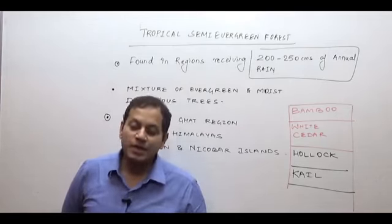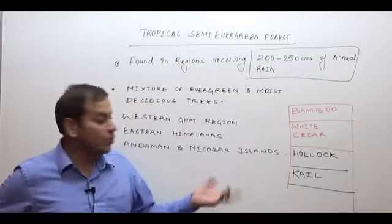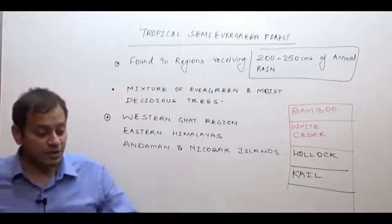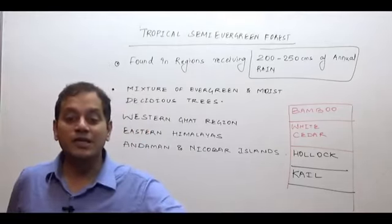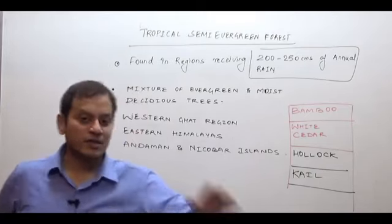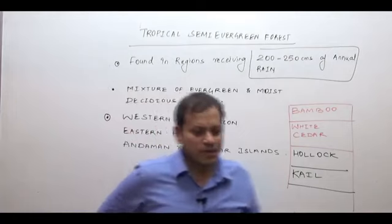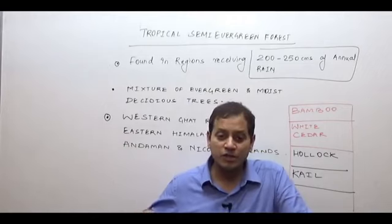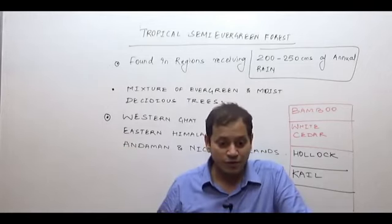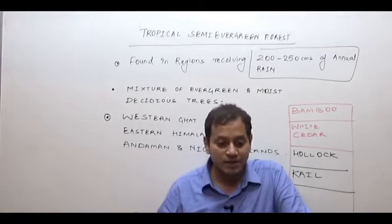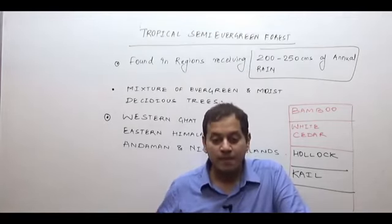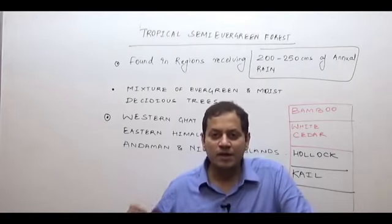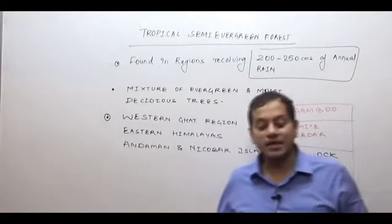UPSC can ask in which state white cedar is found — the answer is the northeast India states. In the NCERT, it mentions that the British were aware of the economic value of this forest. In the Kumaon-Garhwal region of Uttarakhand, they cleared this forest and replaced it with chir pine for construction purposes. They also introduced tea and coffee plantations in northeast India by clearing these forest regions.